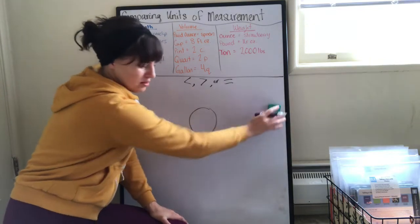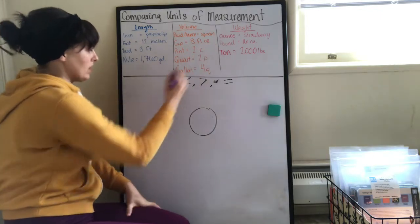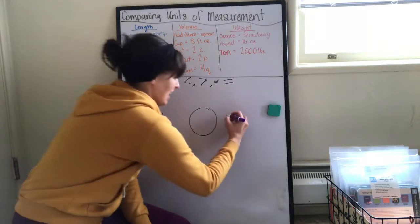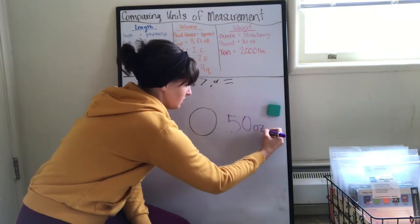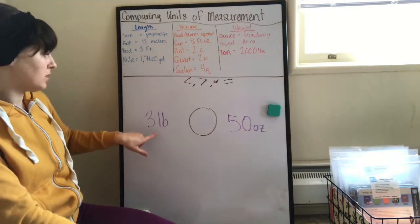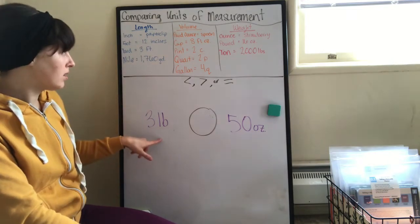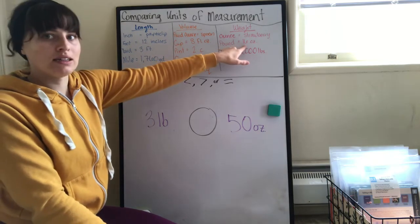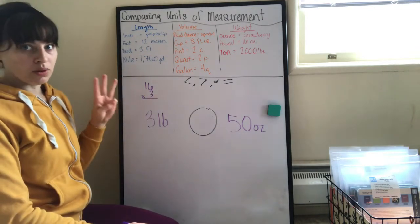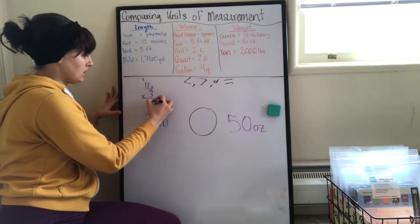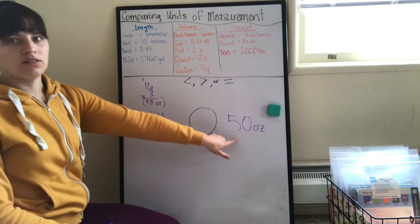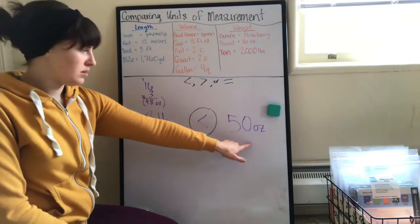Let's do a few more examples. We're going to go to weight. Three pounds and fifty ounces. I usually like to take the bigger one and convert it into a smaller one because multiplying is easier than dividing. Three pounds, one pound is sixteen ounces, but I have three, so sixteen times three. Three times six is eighteen, three times one is three plus one is four, so forty-eight ounces. What's bigger, forty-eight or fifty? Fifty. So fifty ounces is bigger than three pounds.